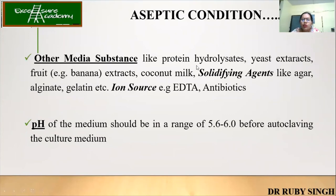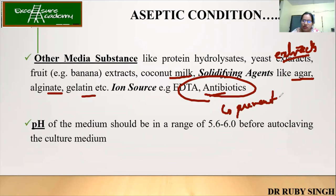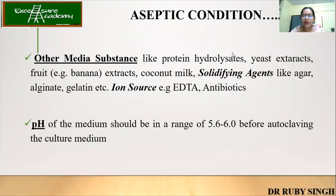Other media substances include protein hydrolysates, yeast extracts, coconut milk, solidifying agents like agar, agarose, and gelatin, and iron source EDTA, and antibiotics to prevent bacterial contamination. The pH of the media is very important — if it is too low or too high, it will not support the growth of the plantlets. That is why it is very important to measure the pH of the media before autoclaving.